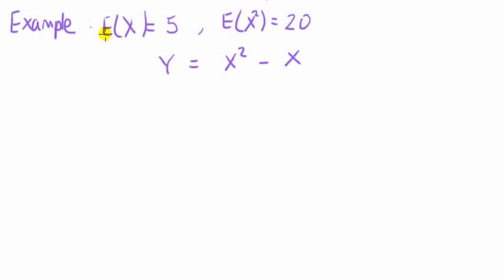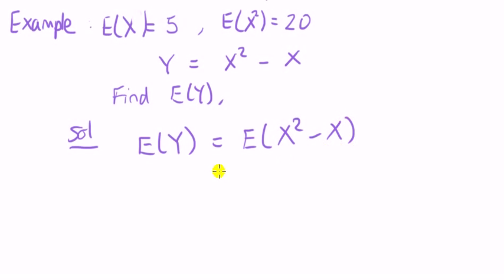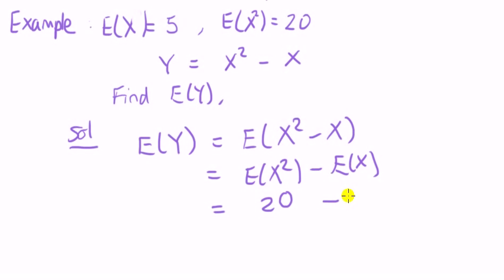Finally: the expected value of x is five, the expected value of x squared is twenty, y equals x squared minus x — find the expected value of y. Don't let x squared frighten you; since x is a random variable, x squared is also a random variable. Taking the expectation of both sides and through the brackets: E[x²] minus E[x], which is twenty minus five, equals fifteen. Easy.